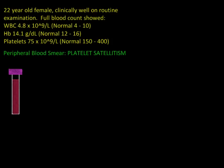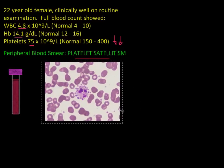Today we have an interesting case of a 22-year-old female who was clinically totally normal on a routine medical examination. A full blood count showed a normal white blood cell count and normal hemoglobin, but she had a low platelet count — an isolated thrombocytopenia. What was reported on the peripheral blood smear was platelet satellitism. You can see here a neutrophil in the middle of the screen surrounded by small platelets. We call that platelet satellitism or rosetting.